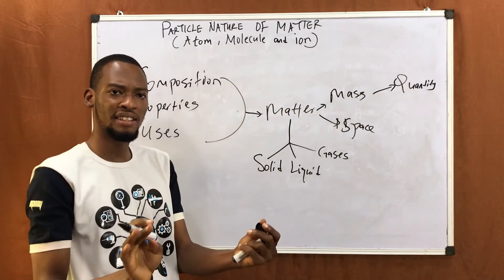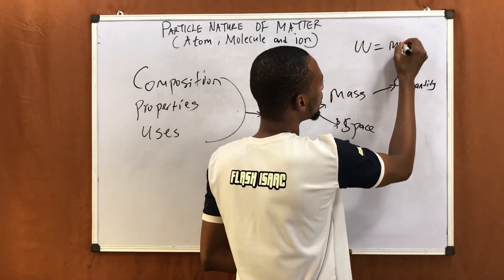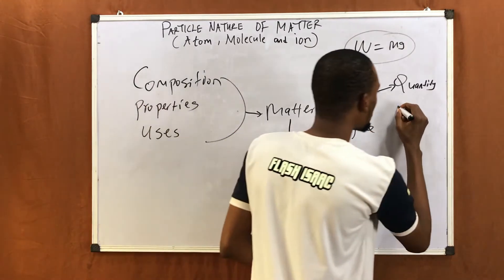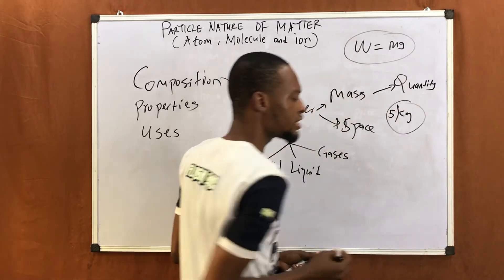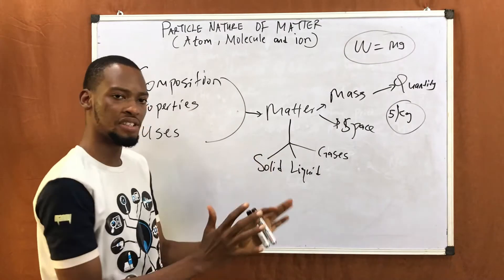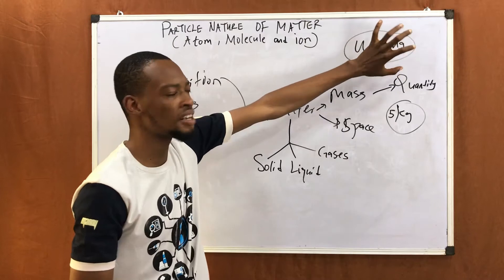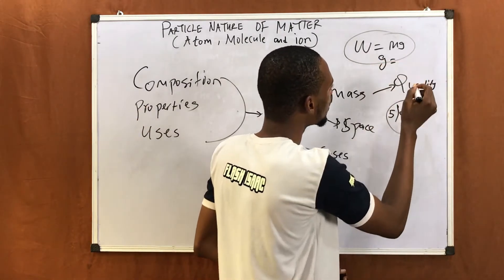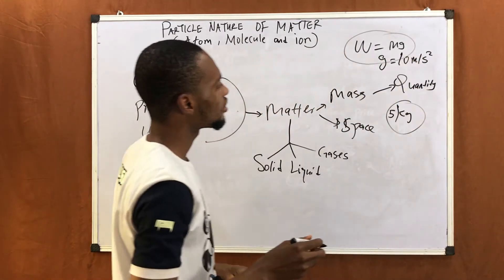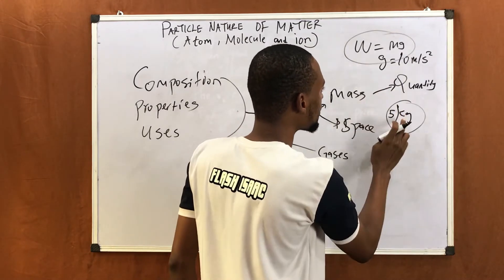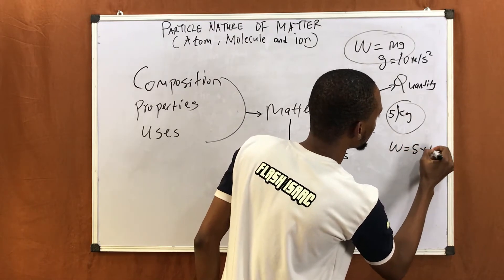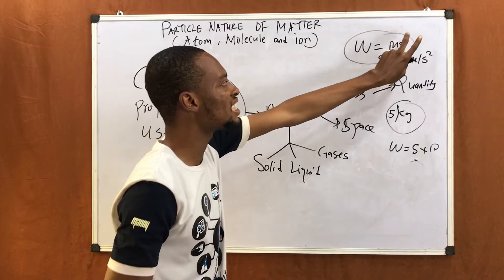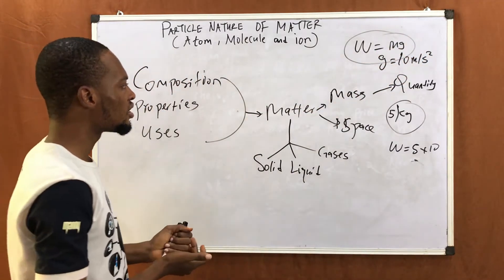Mass is different from weight. Weight is the earth's pull on a body. For example, you can measure mass in kilograms. If you take 5 kg of rice anywhere, it is still 5 kg because that is the mass — it doesn't change. But weight is as a result of gravity, so the value of gravity determines the weight of a body. Around us, where gravity is approximately 10 meters per second squared, a mass of 5 kg would have a weight of 5 times 10, which is 50 Newtons. Weight is mass times gravity.